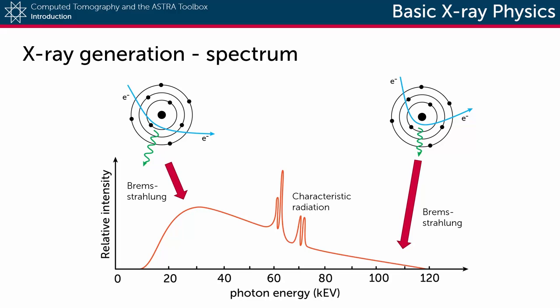Bremsstrahlung occurs when the electron slows down as it passes close to the center of the tungsten atom. The loss of energy is then converted to an X-ray photon and depending on the distance to the atom nucleus, this X-ray photon will then have a different energy resulting in an X-ray spectrum that is for example spread out between 10 to 120 keV.